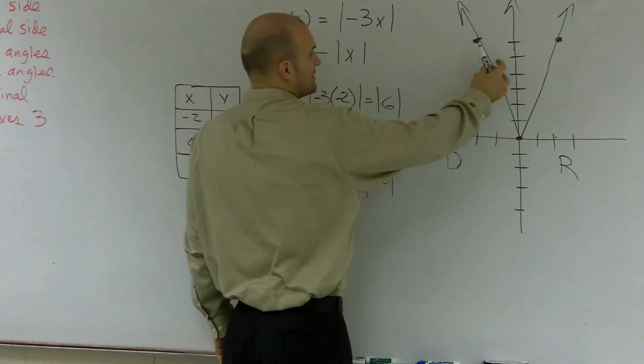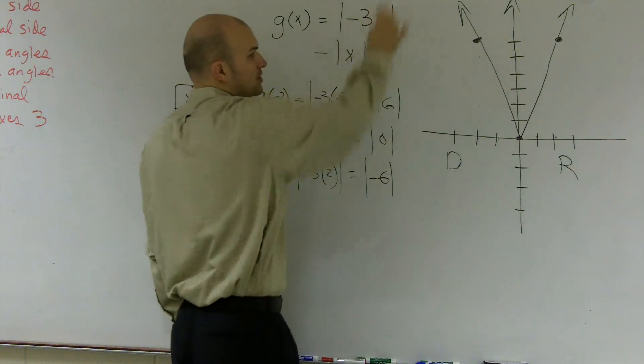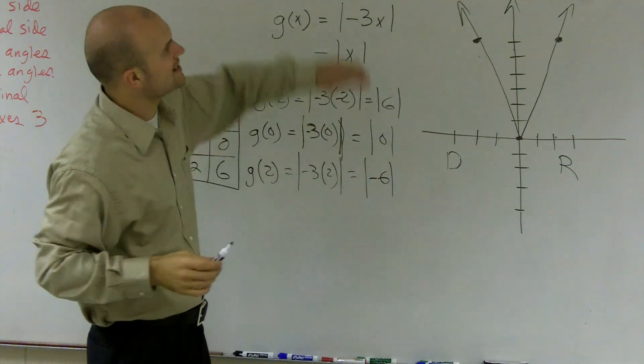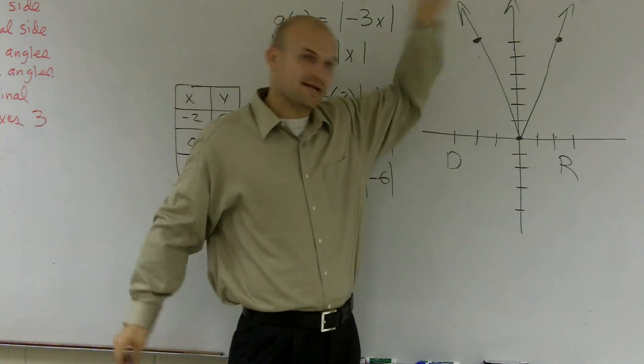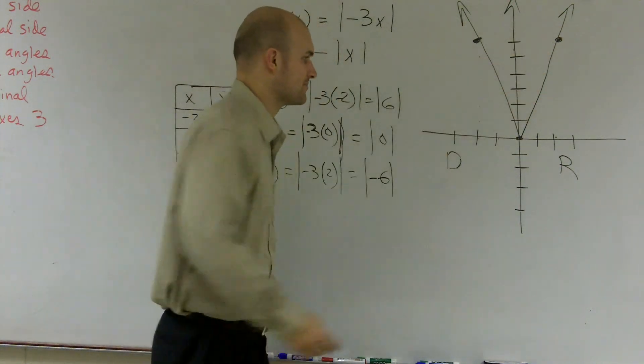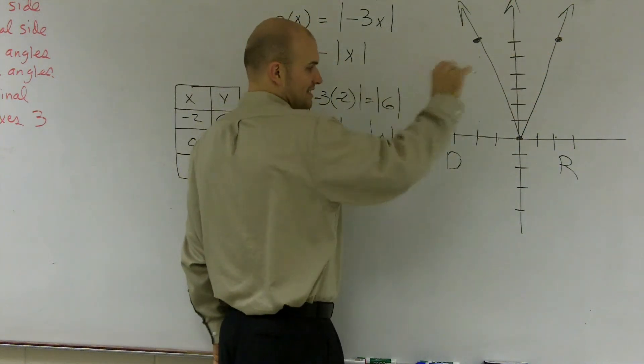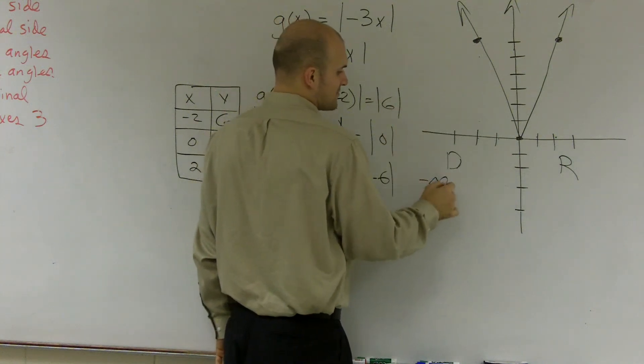So if you notice, the domain, this graph is going to extend up and to the left. So as it goes to infinity, it's going to keep going left, and as it goes over to the right, it's going to keep going to the right. So therefore, I can say my domain is from negative infinity to infinity.